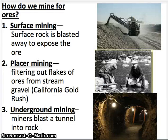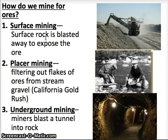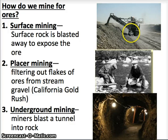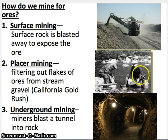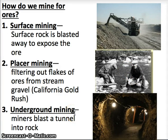Once we find the metals, how do we get them out of the ground? There are usually three techniques. The first is surface mining — similar to coal extraction — where you blast away the surface rock to expose the ore underneath. The second is placer mining, where you filter out flakes of ore from stream gravel. Metals are heavier than soil, so they sink to the bottom of a pan when washed with water. Today we use machines to speed up this process.